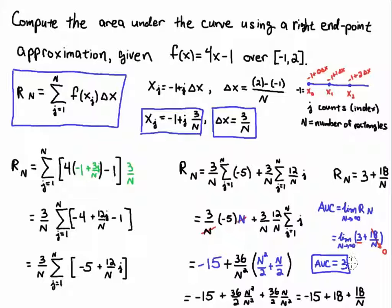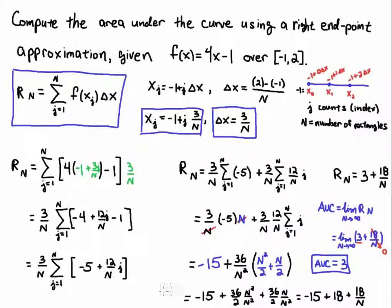This is how you do a right endpoint approximation of a function, and to get the exact area under the curve we evaluate this limit as n goes to infinity, where n is the number of rectangles. Good luck.